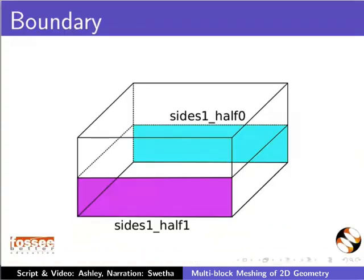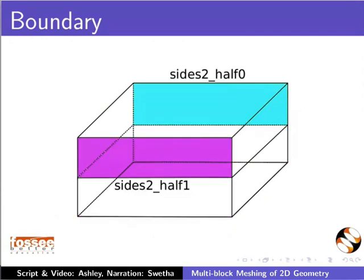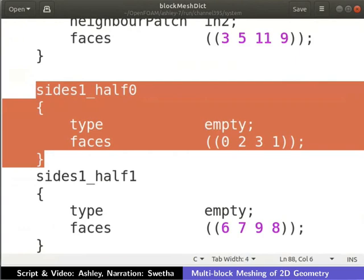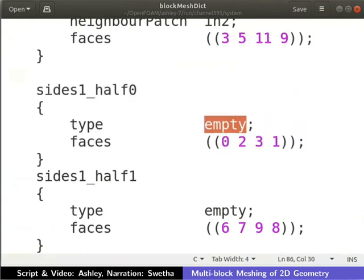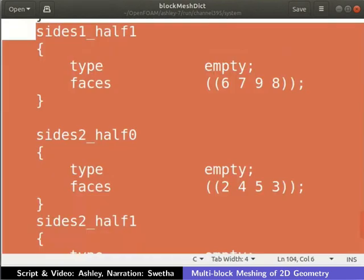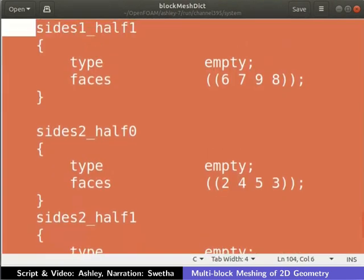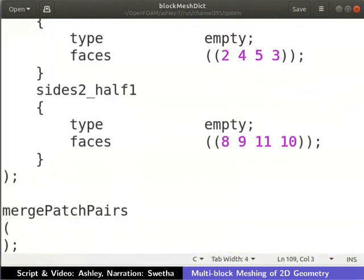The back and front faces of block 1 are named sides 1 underscore half 0 and sides 1 underscore half 1 respectively. The back and front faces of block 2 are named sides 2 underscore half 0 and sides 2 underscore half 1 respectively. We are creating a geometry for a 2D simulation in the xy plane. Therefore, the faces normal to z direction are kept empty. The back face of block 1 is defined as shown. Note that we have kept the face empty. Similarly, we define the other three faces.